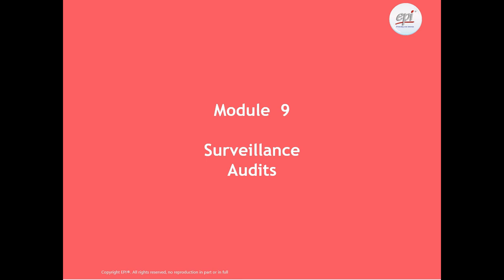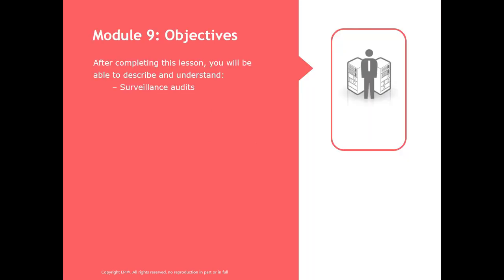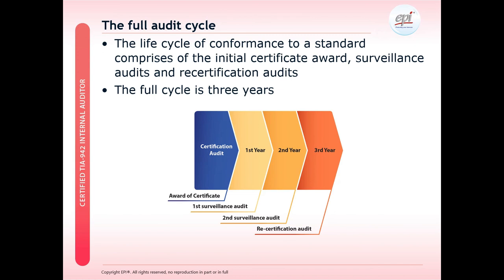Under Module 9, we will look at surveillance audits and the process around them. Upon completing Module 9, the participant should be able to describe and understand the purpose and reasoning for surveillance audits. We are showing the full audit cycle in accordance with ISO standards. The life cycle of conformance to an international standard comprises the initial certification award, surveillance audits and recertification audit — a full three-year cycle. We award the certificate, then have a first year surveillance audit, a second year surveillance audit, and in the third year we recertify the site.